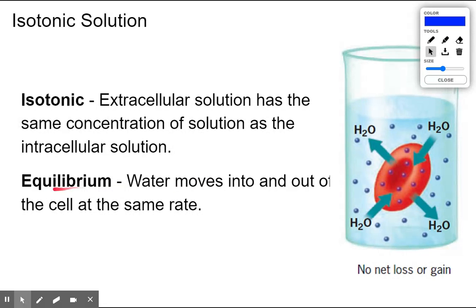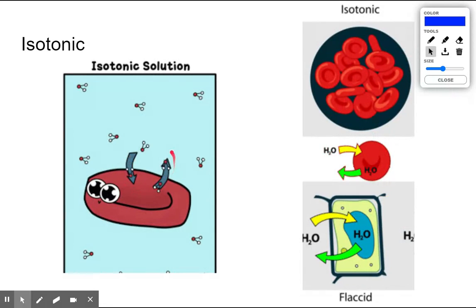It moves the same rate in as it does out. Here we can see that a little bit better. We can see water moving both in and out of the cell at the same rate. Again, the solution surrounding it is called isotonic, and this process of water moving at the same rate is called equilibrium.